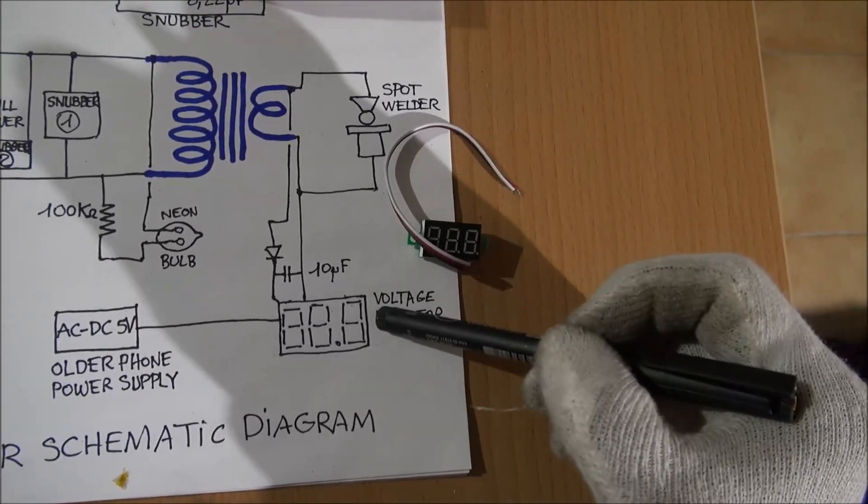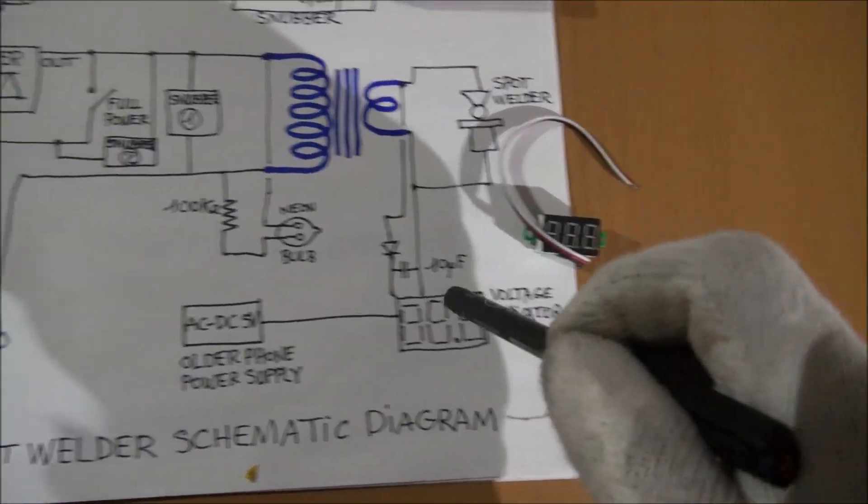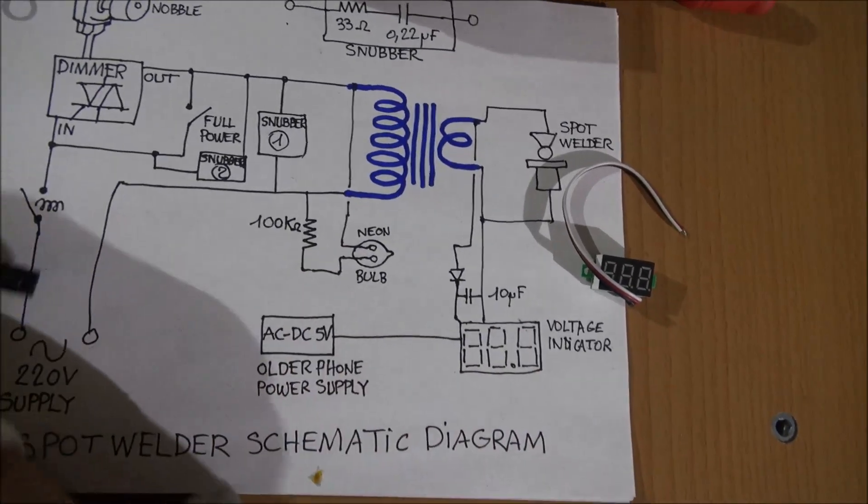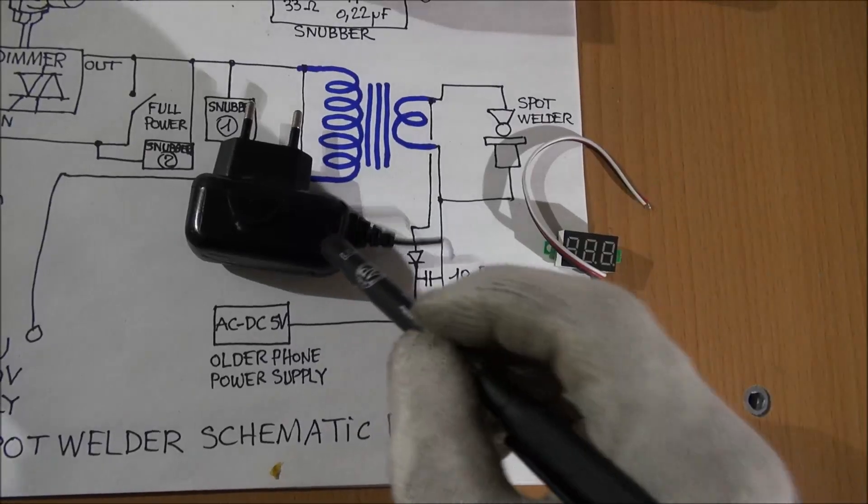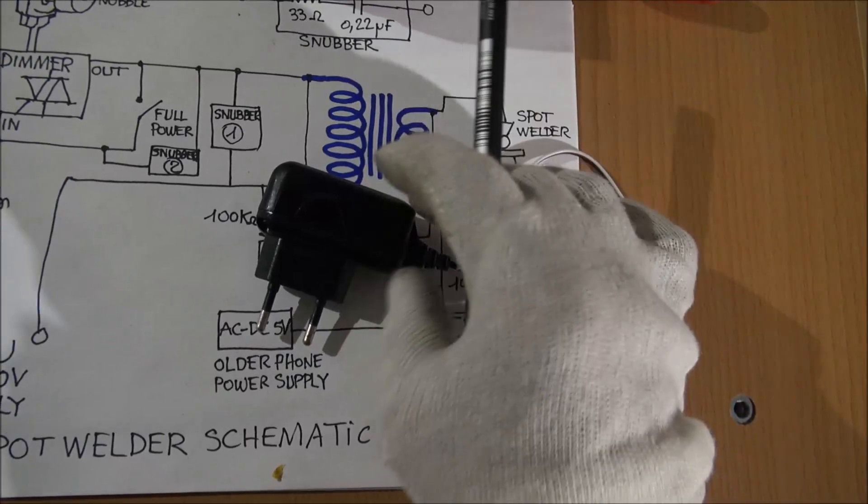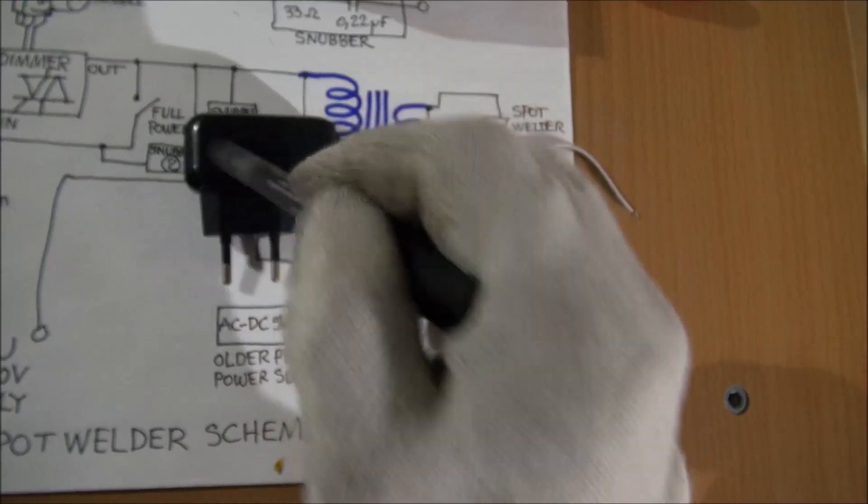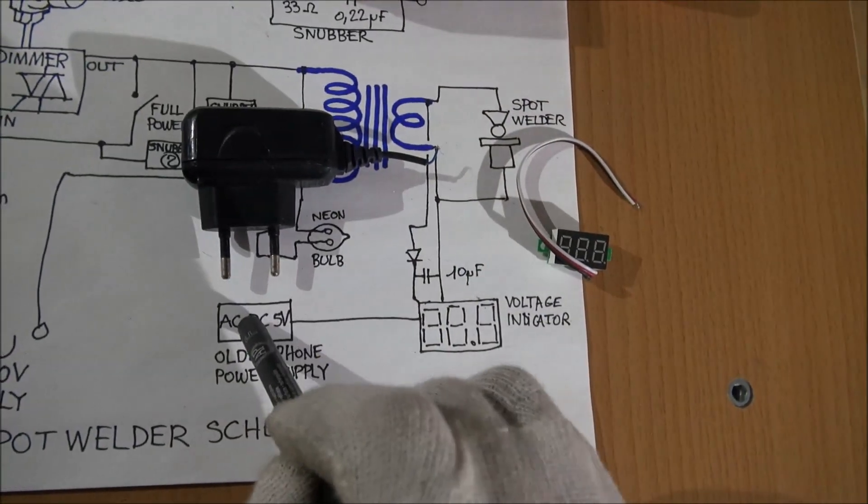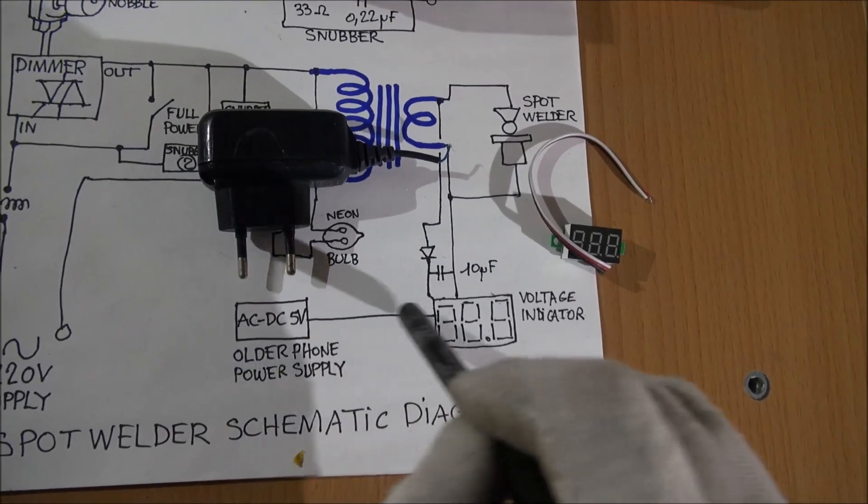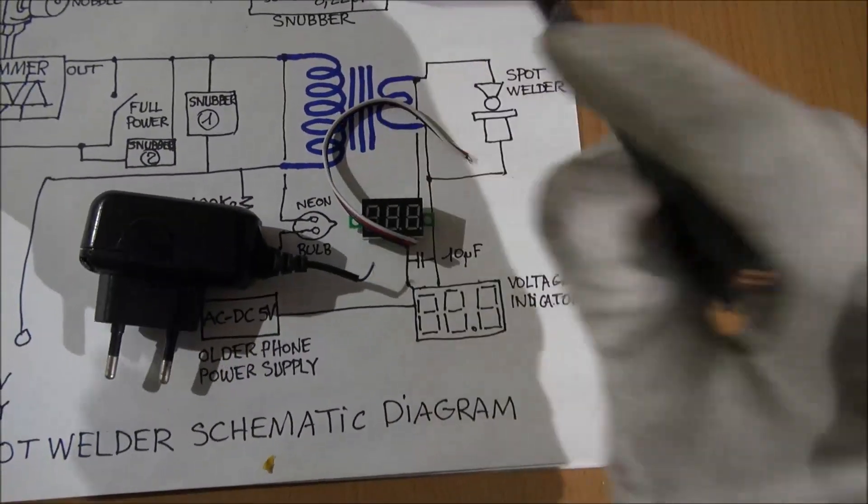And this voltage indicator. So the voltage indicator must have its own power supply. This power supply here is coming from an old phone charger. This is the old phone charger. You must open it, or you can use it like this, it's not very important. And this phone power charger gives the five volts used for the voltage indicator.